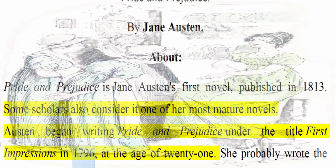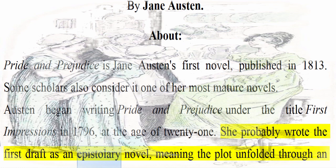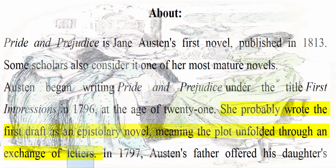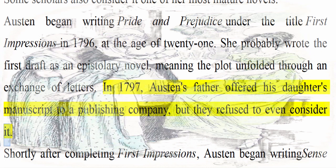She probably wrote the first draft as an epistolary novel, meaning the plot unfolded through an exchange of letters. In 1797, Austen's father offered his daughter's manuscript to a publishing company, but they refused to even consider it. Shortly after completing First Impressions, Austen began writing Sense and Sensibility, which was not published until 1811.